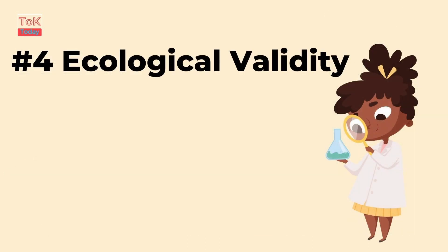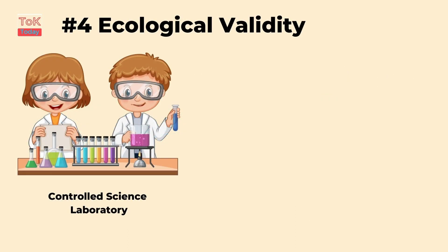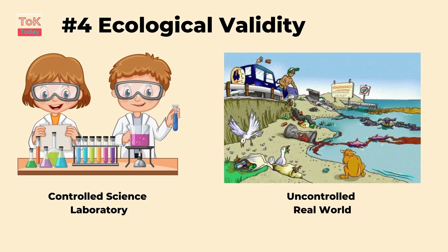Evaluation point number four: ecological validity. This concerns how the findings of a study can be generalised to real-world settings. While laboratory experiments offer control over variables, they often lack ecological validity because the conditions are artificial and may not represent natural environments. This raises important questions about how applicable scientific findings are to realistic situations. Scientists must balance experimental control with ecological validity, considering both in their experimental design.